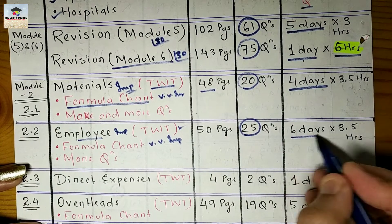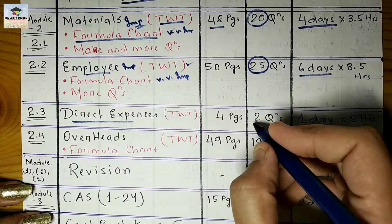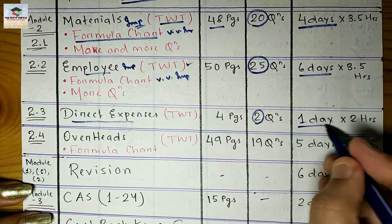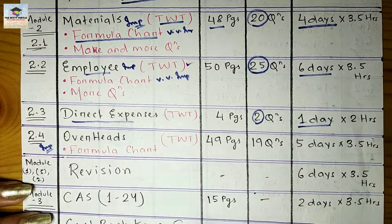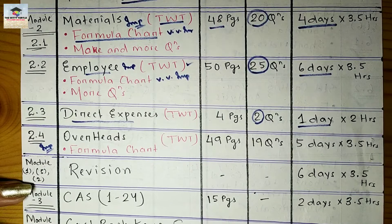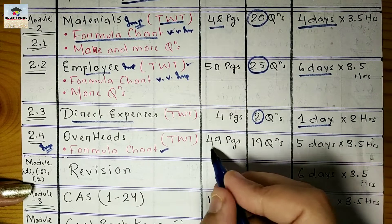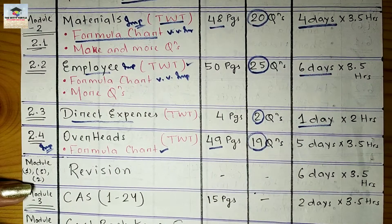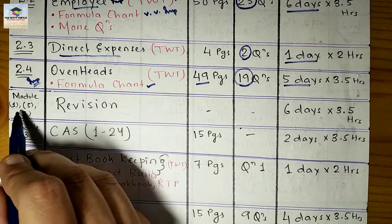The next chapter is Employee cost — Labour Cost — also very important, and it will take six days to complete. Then there is a small chapter on Direct Expenses with only two questions, taking hardly one day. Lastly, Overheads is very, very important — every year you get at least one short question from this chapter. Make a formula chart. It has 49 pages and 19 questions, taking five days.